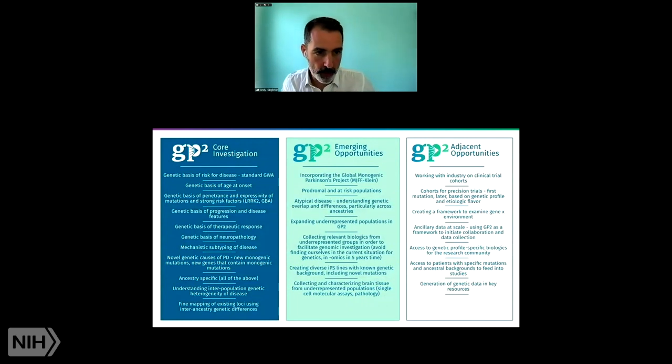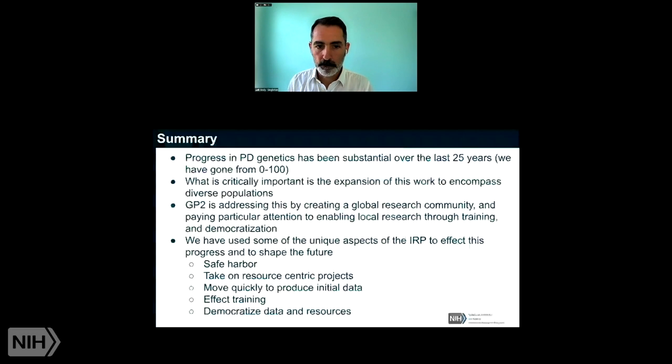So there are a ton of things we can do in GP2. And of course, there are the obvious genetic things that I talk about on the left-hand side of this slide, centered around discovery, finding new risk factors, finding new genes, finding modifiers, also creating resources, providing individuals who are working on the functional side of this work with diverse iPS lines or diverse brain tissue. But there are more and more other things that are coming along, more emerging opportunities and adjacent opportunities. And this really speaks to, I think, the power of what we're trying to create here. Again, we're not trying to create something where GP2 does all of the analysis, gets all of the kudos and we're done. We're trying to create a framework that allows others to be able to access data and resources in order to be able to affect research at a global scale.